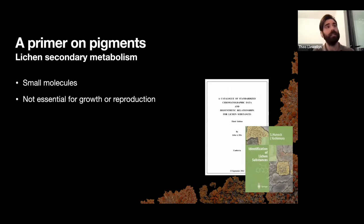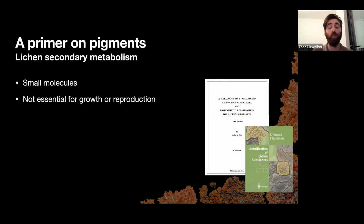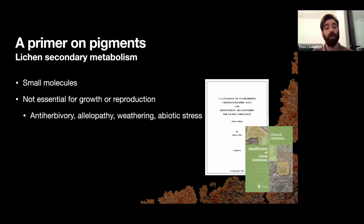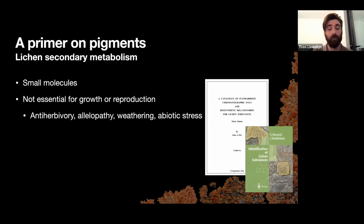A lichen can do its primary carbon and nitrogen metabolism and produce spores without having to use these secondary metabolites. But that's not to say they are unimportant — they have really important functions. They can be anti-herbivory: especially molluscs love to eat lichens, so lichens produce these compounds to limit herbivory. They can also be allelopathic.